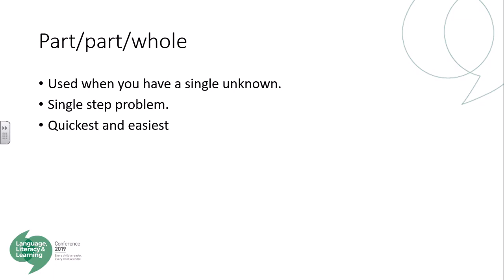This is the part-part-whole bar model, and it's used when you have a single unknown. For any grade, it's quite hard to use this one — it's a single step problem, and it's the quickest and easiest of the three different types of bar model.